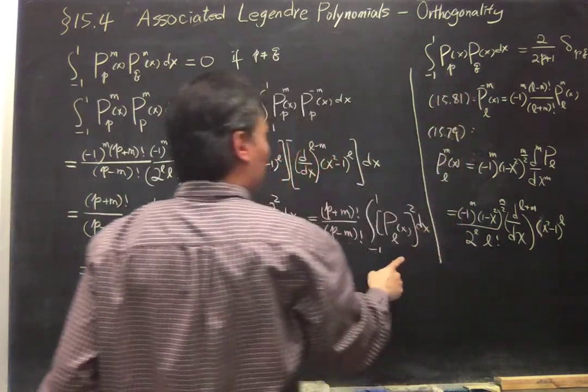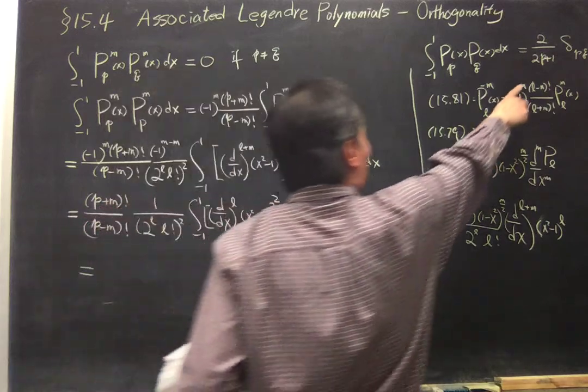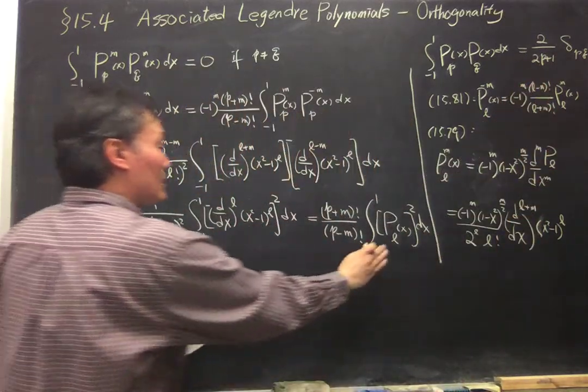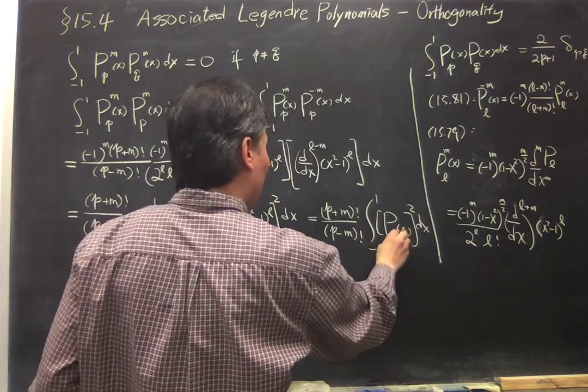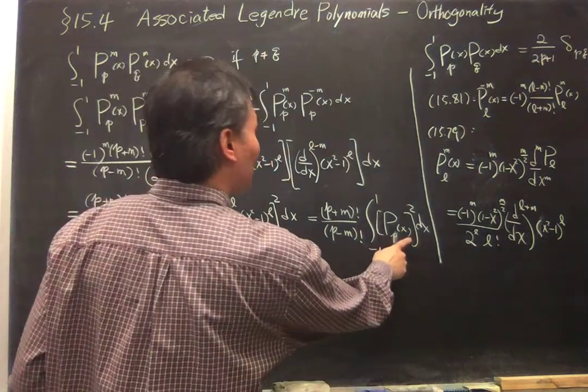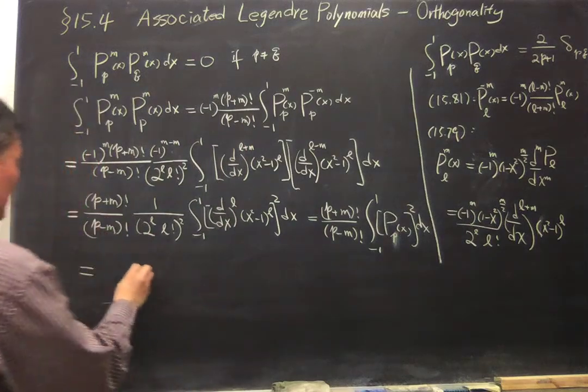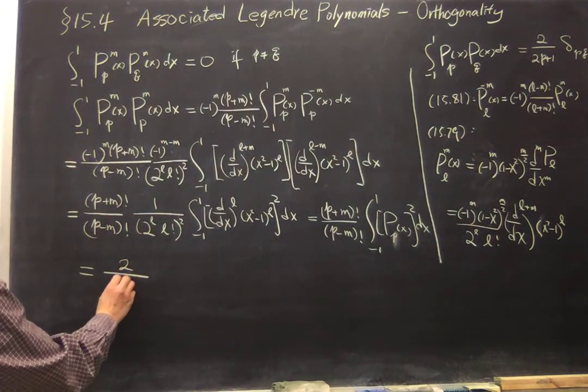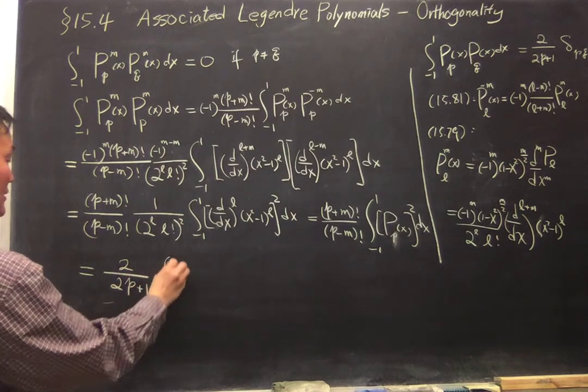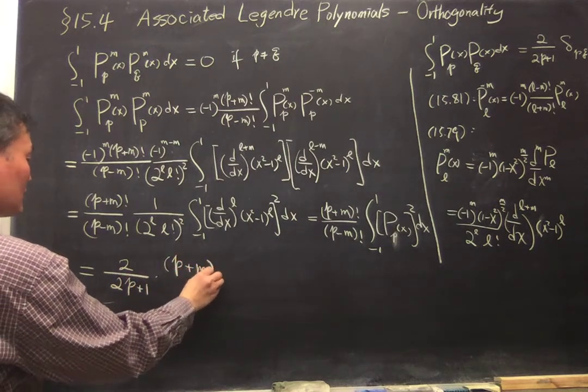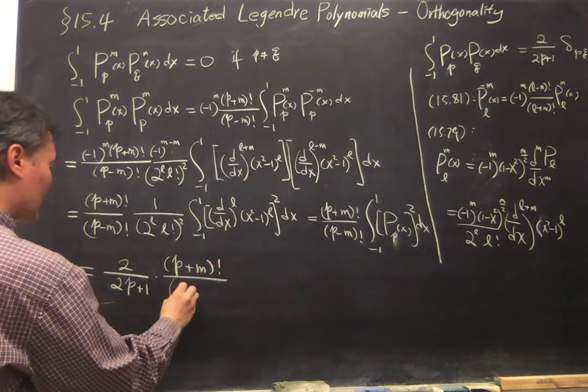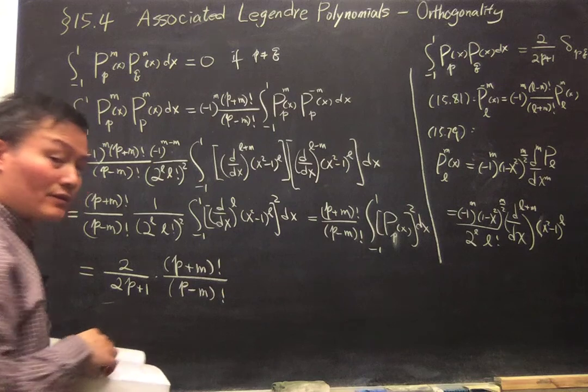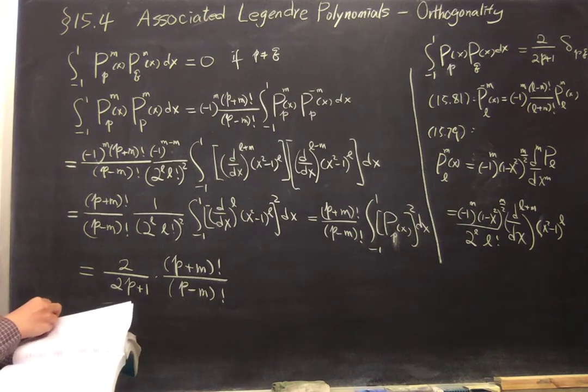This is two divided by two P plus one. When P equals Q, that equals two times two P plus one times P plus N factorial divided by P minus N factorial.